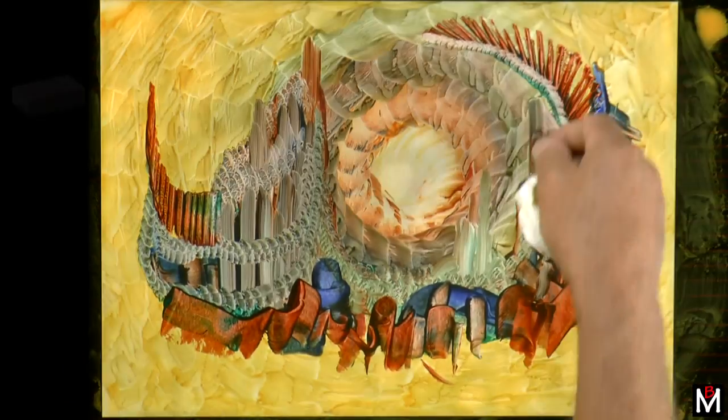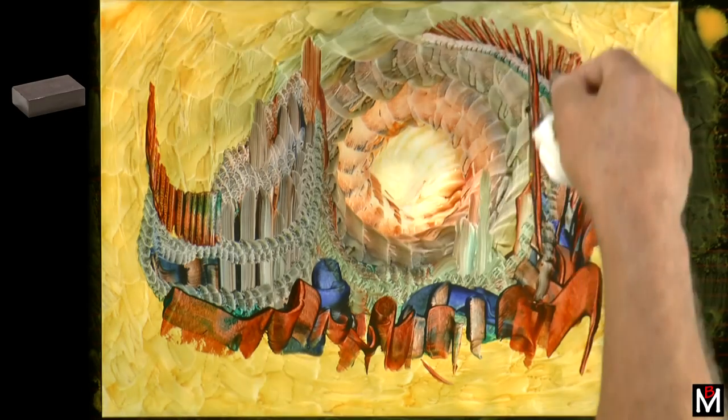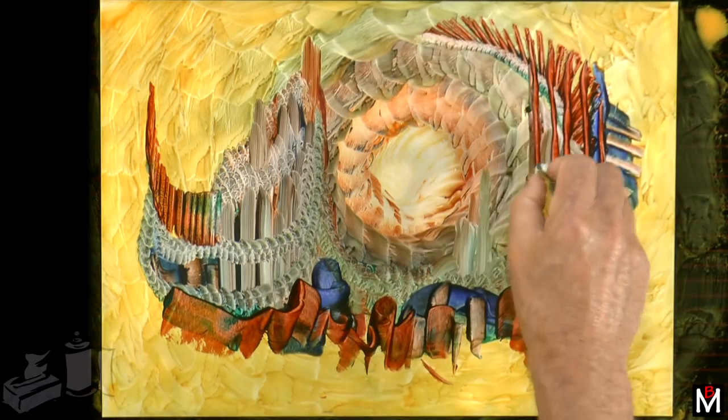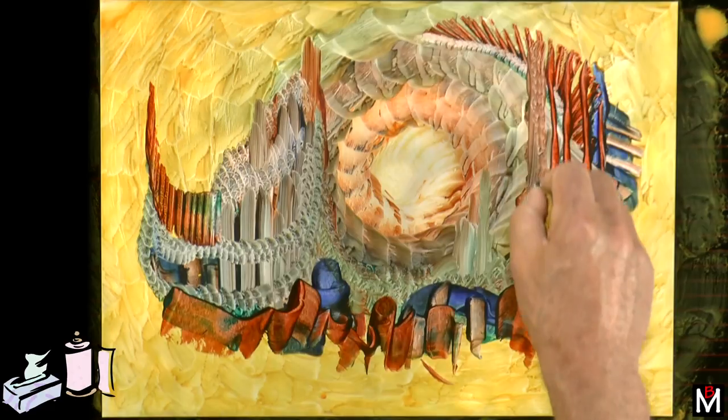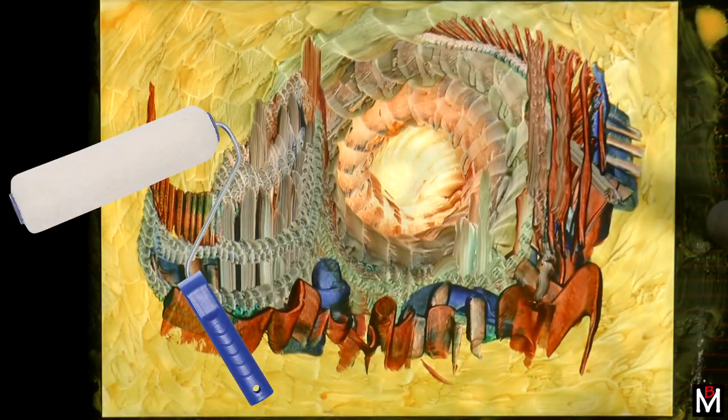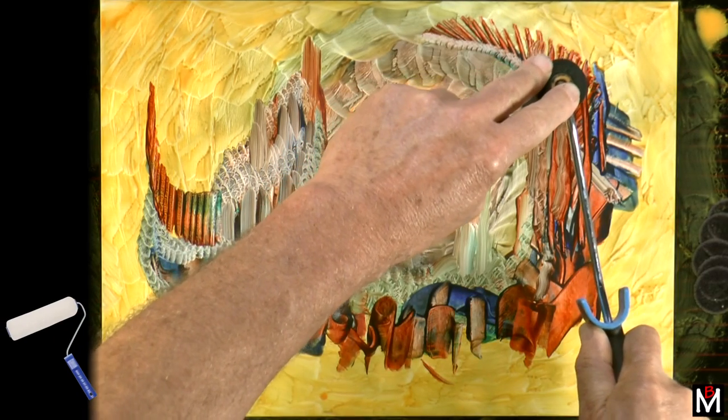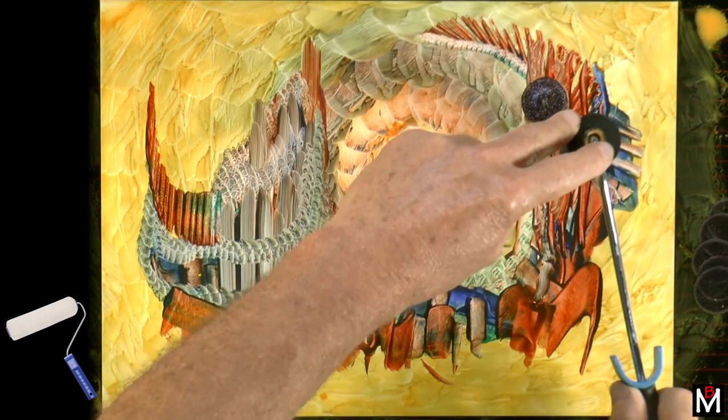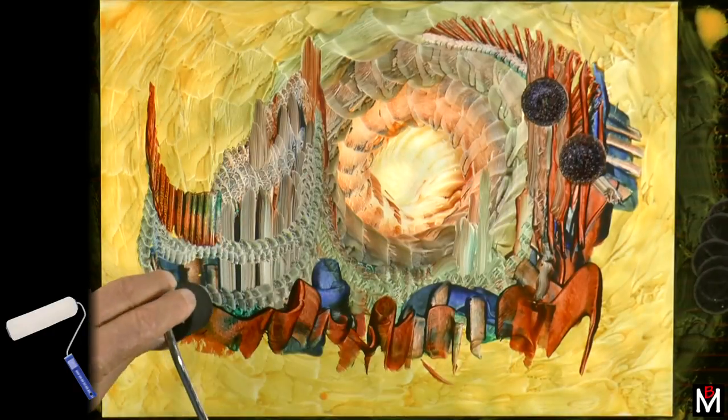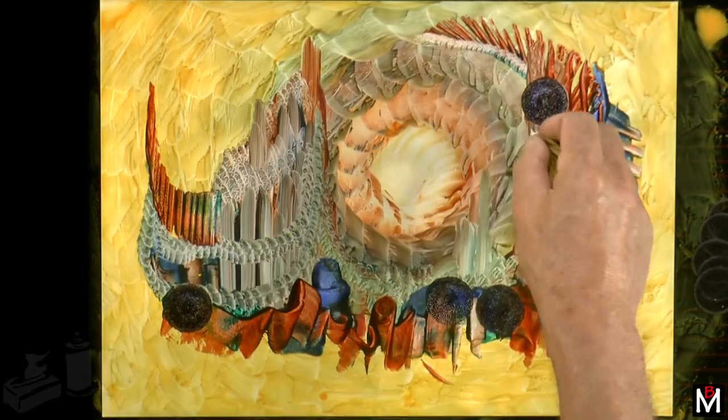Sometimes there are bits I don't like and I change them—that's the beauty of working this way. This is a sponge roller, 100 millimeters or four inches long. I'm using it to apply darker color, pressing down the round end of the roller and working those colors into the image.